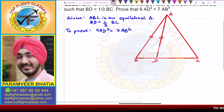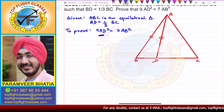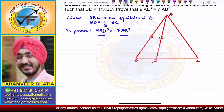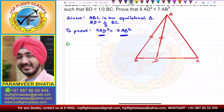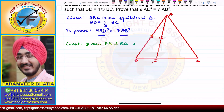Now, what do we have to do? We have to draw an altitude. Why? Because we need AD squared and AB squared, and square terms are related to Pythagoras theorem. That is why we will do the construction: draw AE perpendicular to BC, that is, the altitude.